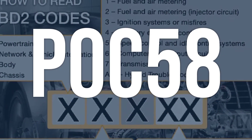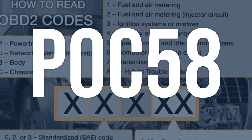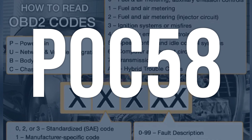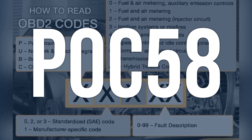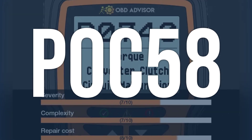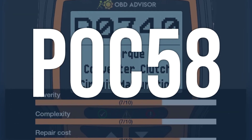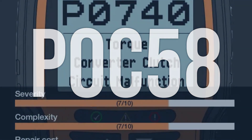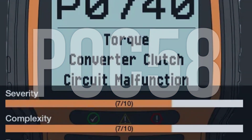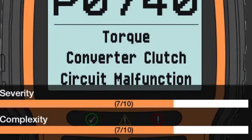OBD2 fault code P0C58 means that there is a high circuit problem with the drive motor B position sensor, which is responsible for telling the motor control module the position of the drive motor output shaft.